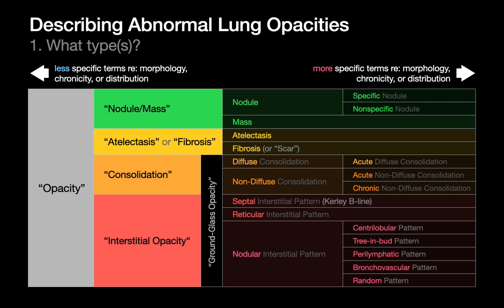As imaging quality decreases, we're obligated to use more general terms because we don't have enough imaging information to be specific. On a poor portable chest x-ray, I doubt I'll be able to tell the difference between centrilobular, tree-in-bud, nodular, or reticular patterns, so the best I can do is call it an interstitial opacity. When you hear people describe chest x-rays versus chest CTs, it often feels like two different vocabularies, but it's actually just the same vocabulary — people are using either more specific or more general terms from this vocabulary.